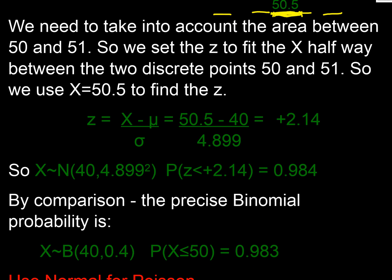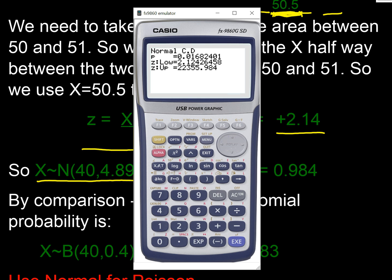So we're going to calculate our Z using our standard formula for Z. And now our X value here for the midpoint that we use is 50.5, take away 40 which is the mean, and divide by 4.899 which is our standard deviation, and we get a Z value of plus 2.14 in this case. If we feed that into our normal, we're going to get this probability, so let's do that on a calculator just to convince ourselves.